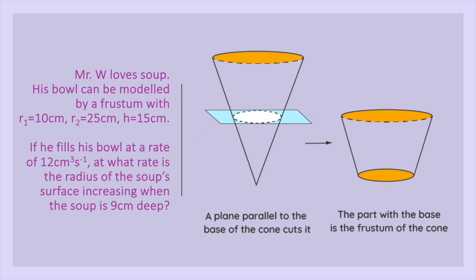If he fills his bowl at a rate of 12 centimeters cubed per second, at what rate is the radius of the soup's surface increasing when the soup is 9 centimeters deep?